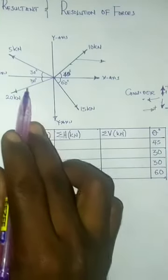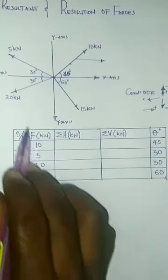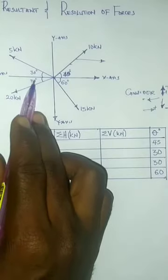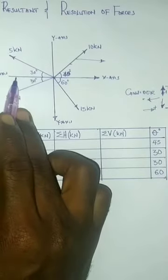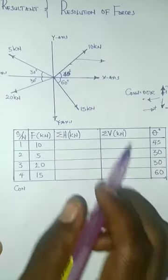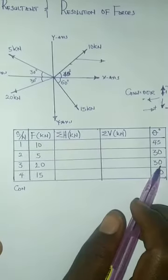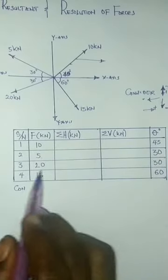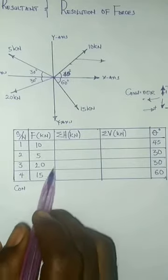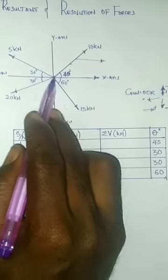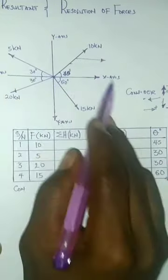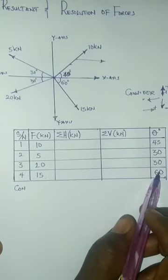Force number three is 20 kilonewton, acting at an angle of 30 degrees to the horizontal — that is, inclined to the horizontal, and that is also 30 degrees. And force number four, 15 newton, acting to the horizontal — that is 60 degrees.